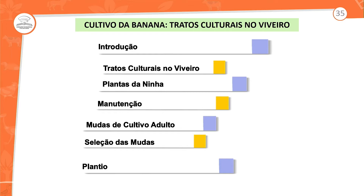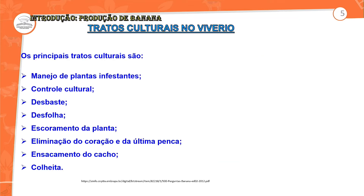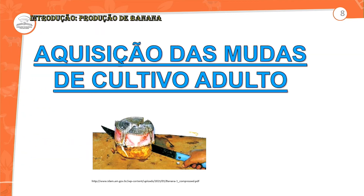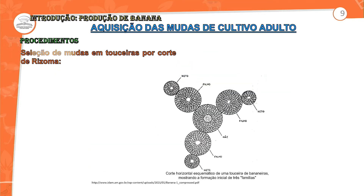Lá na aula anterior nós falamos sobre o manejo do plantio: manejo do plantio infestantes, controle cultural, desbaste, desbaste das folhas, escoroamento da planta, eliminação do coração, da penca, ensacamento do cacho até a colheita. Nós vimos como é que se faz aquisição das mudas. Qual é o processo? Pegar a mãe — você verifica a mãe. Quem são os filhos, quem são os netos. E sempre direcionar para a parte norte, leste ou sudoeste.